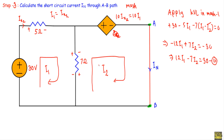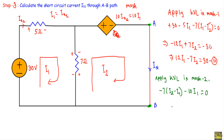Applying KVL in mesh 2: −7·(I2 − I1) − 10·I1 = 0, which simplifies to 3·I1 + 7·I2 = 0. This is equation 4.